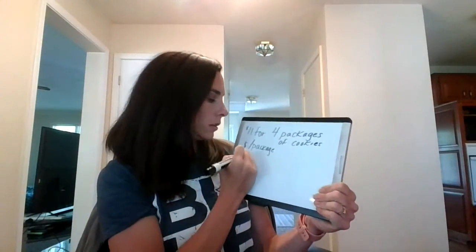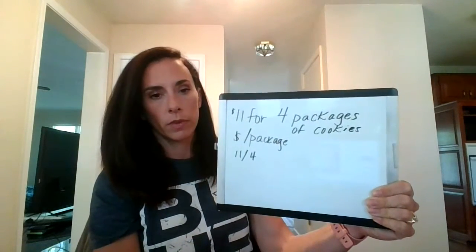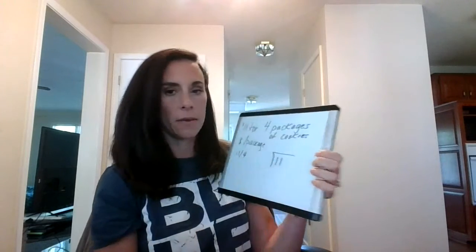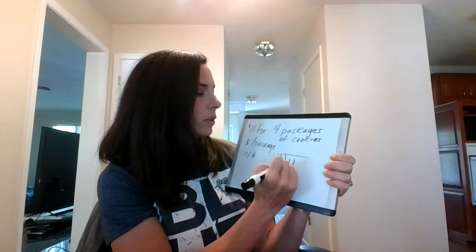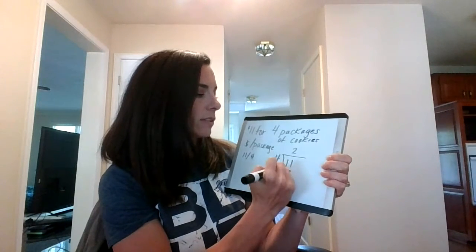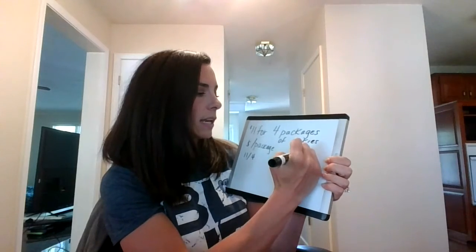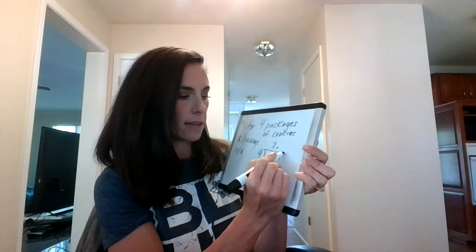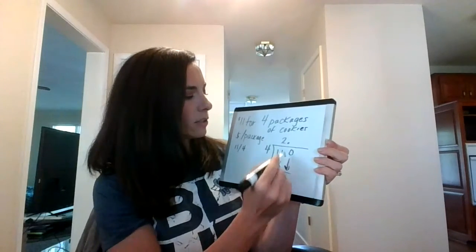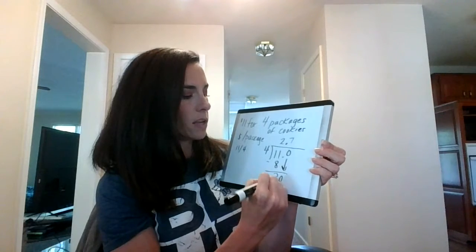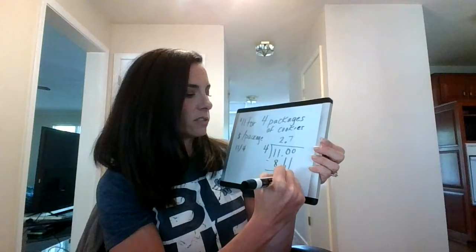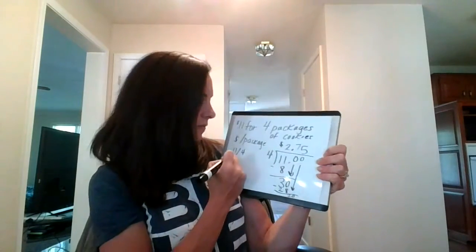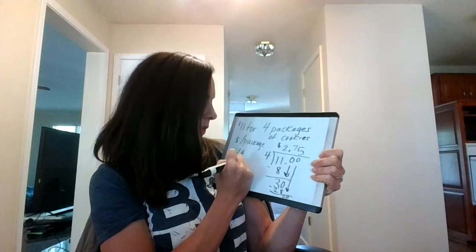We're going to divide 11 divided by 4. Remember that we always put our top number under the division sign. 4 goes into 11, 2 times. 2 times 4 is 8. Subtract, annex a decimal, bring it up, put a zero — please do not use calculators today. 4 goes into 30, 7 times. 7 times 4 is 28. Subtract, we have a 2. Bring down our zero. 4 goes into 20, 5 times. She spent $2.75 per package.